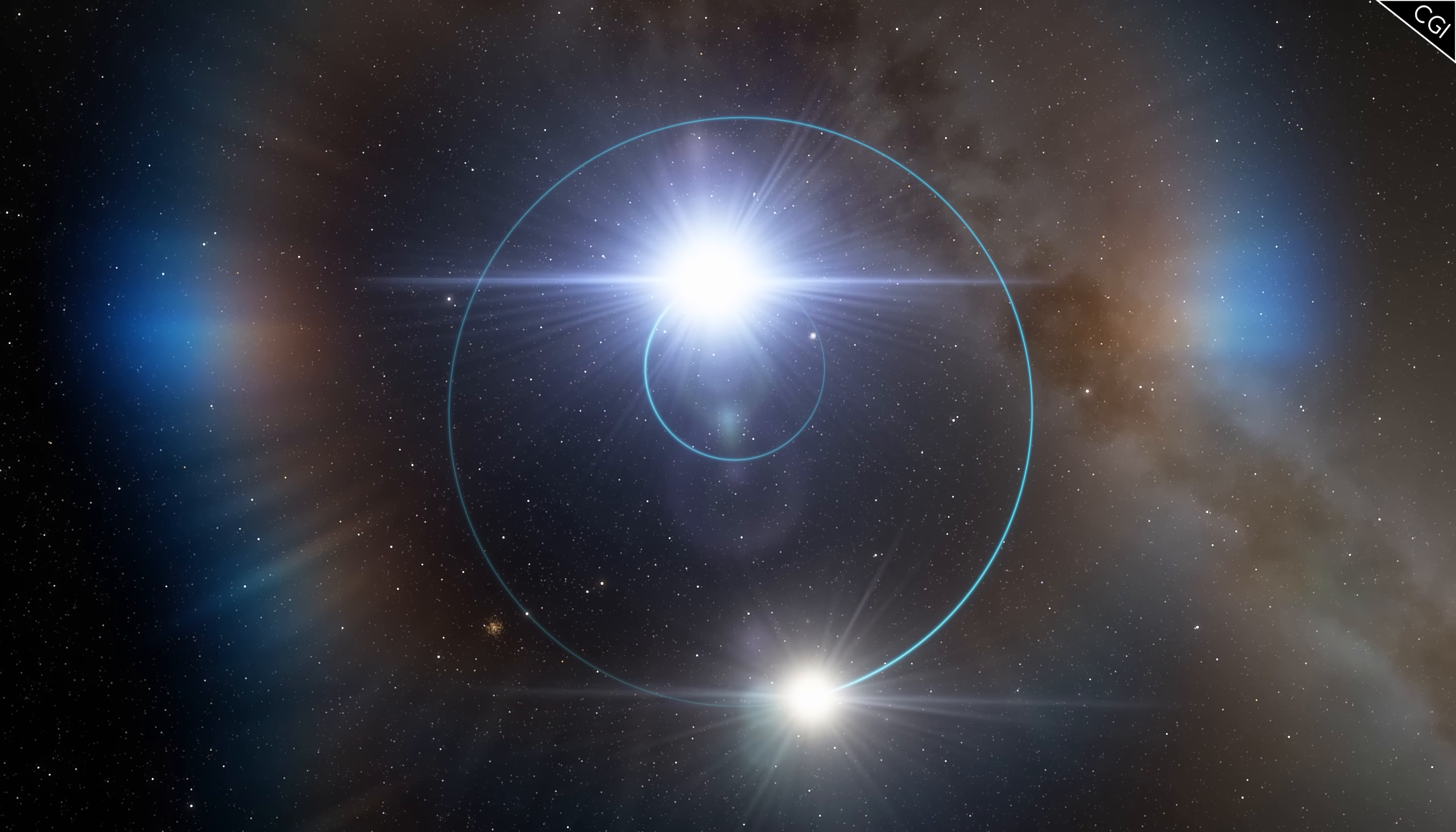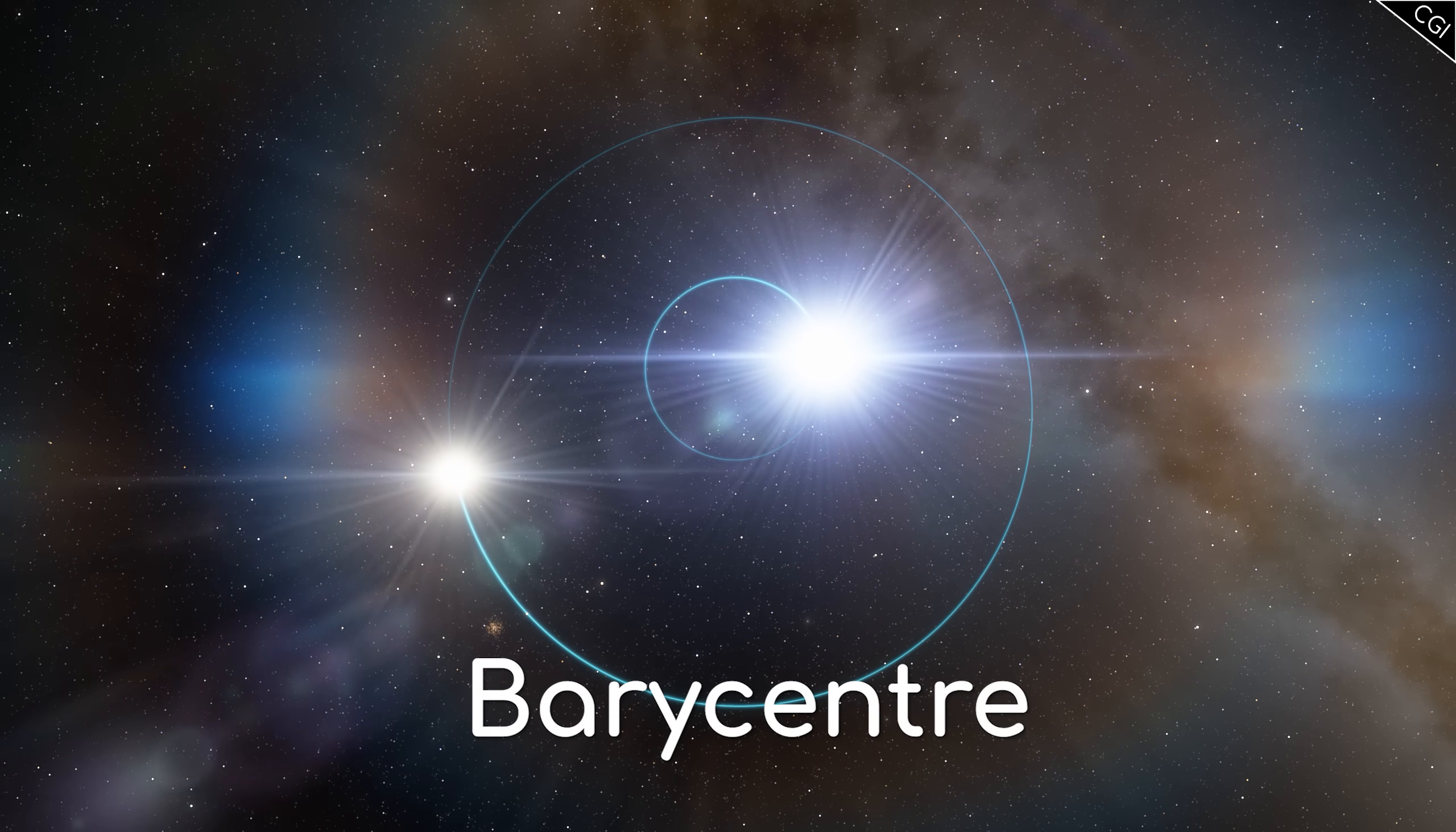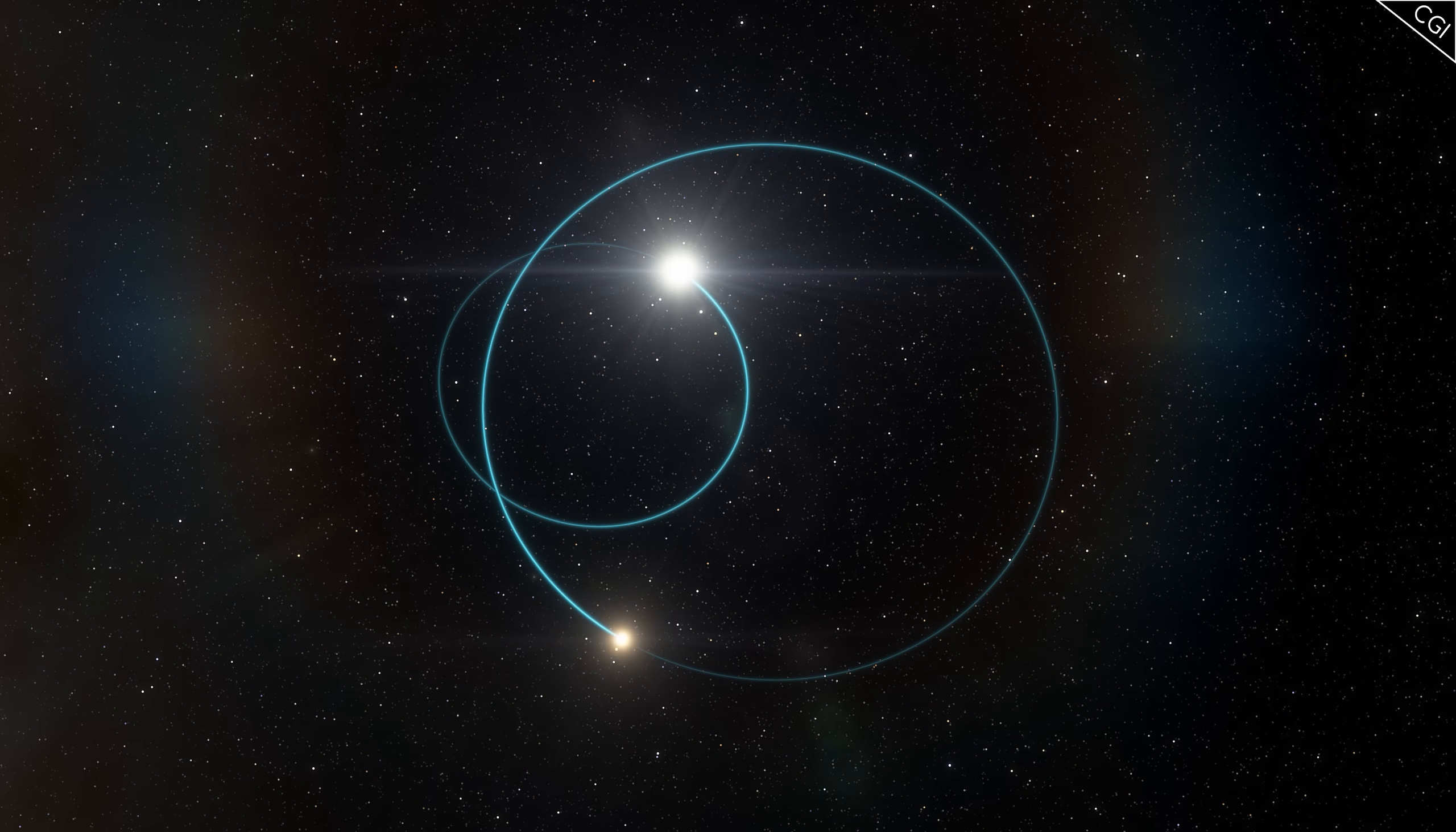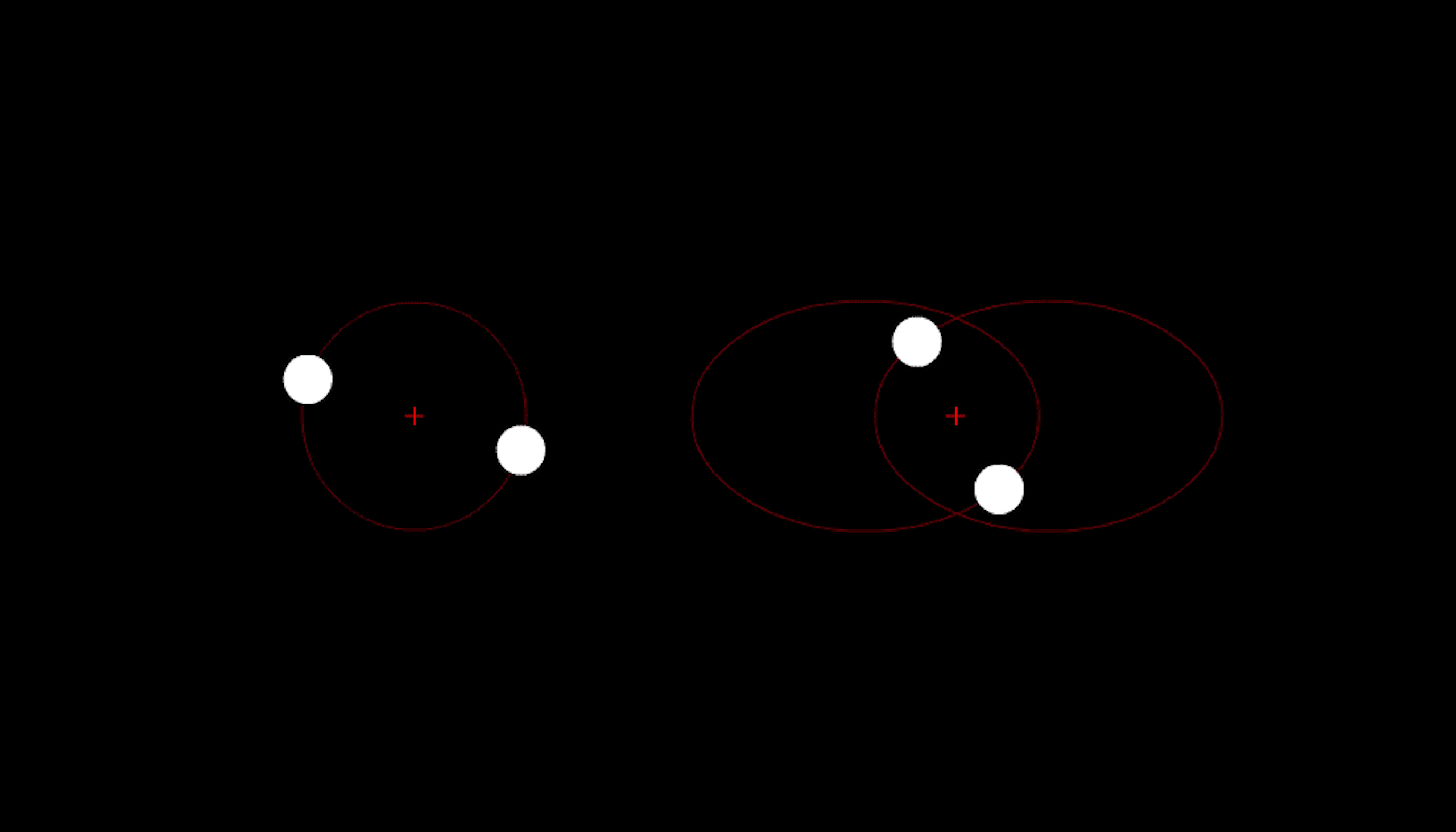In a binary star system, the stars orbit around the system's barycenter, or the center of mass. Depending on the mass of the star and the distances between them, you'll have differences in how these orbits look. For similarly sized stars, the orbit could look circular in nature, or in an ellipse.